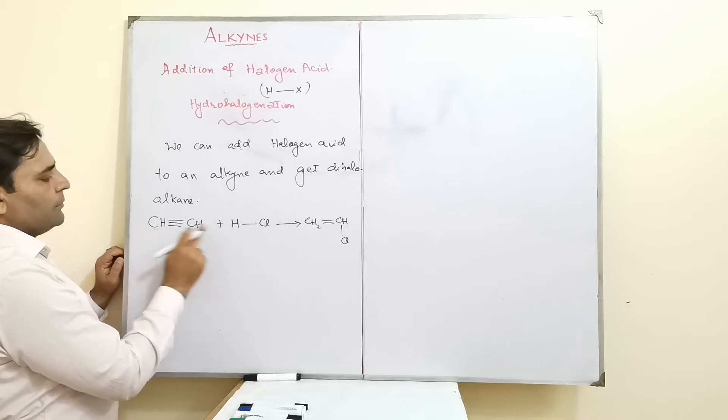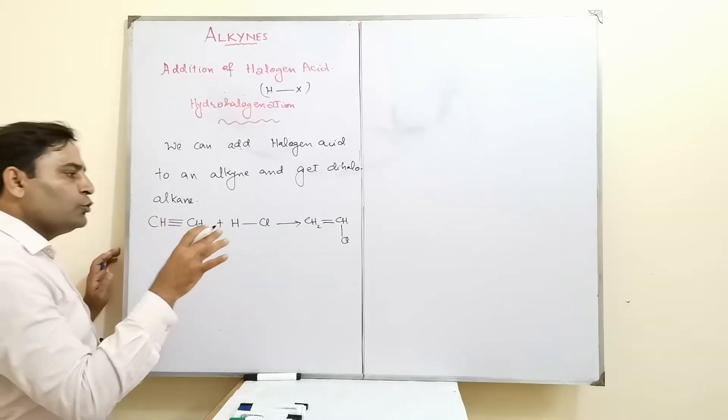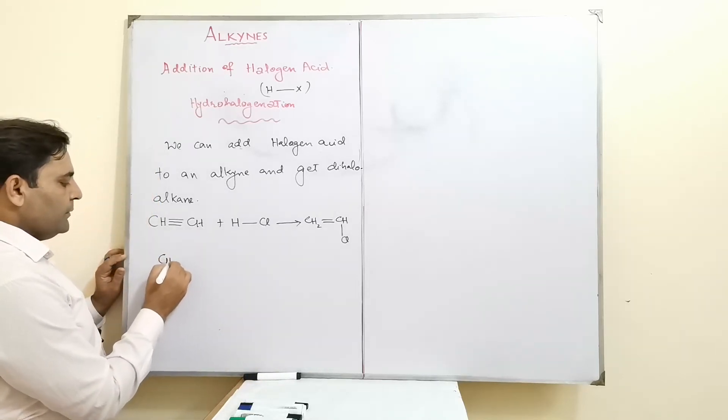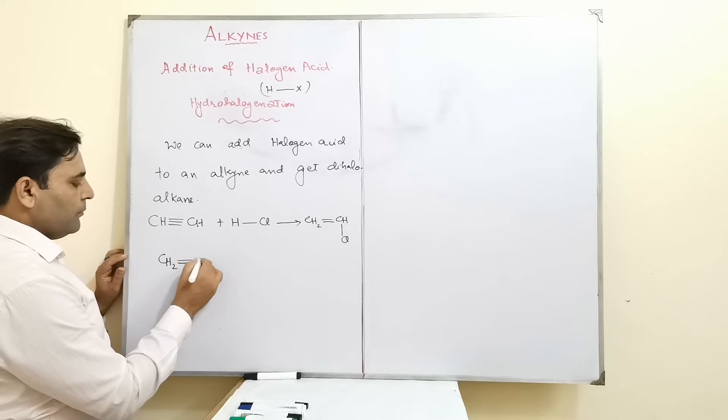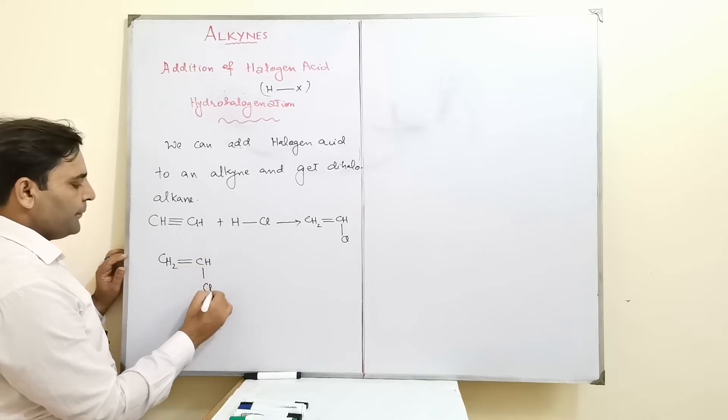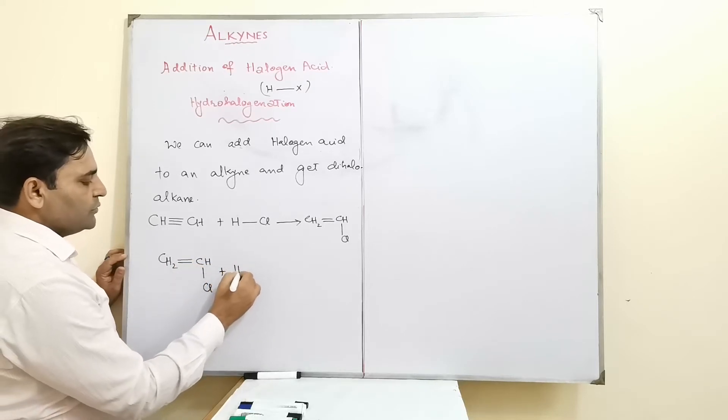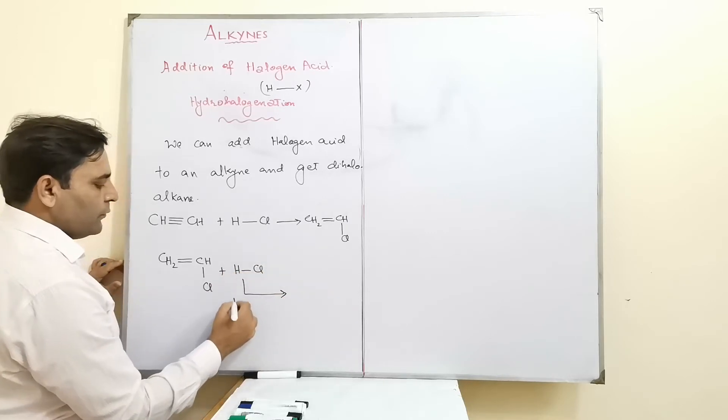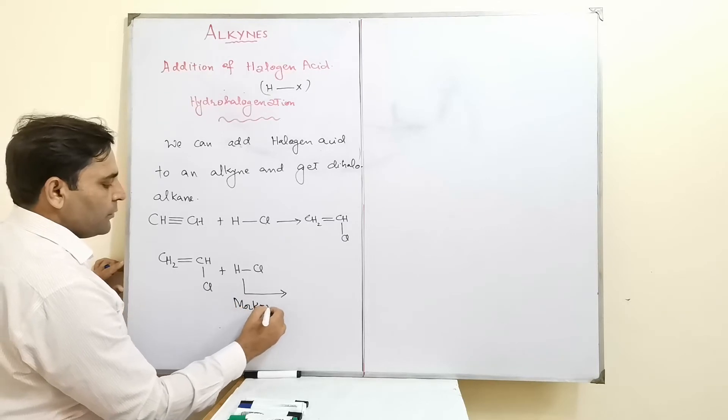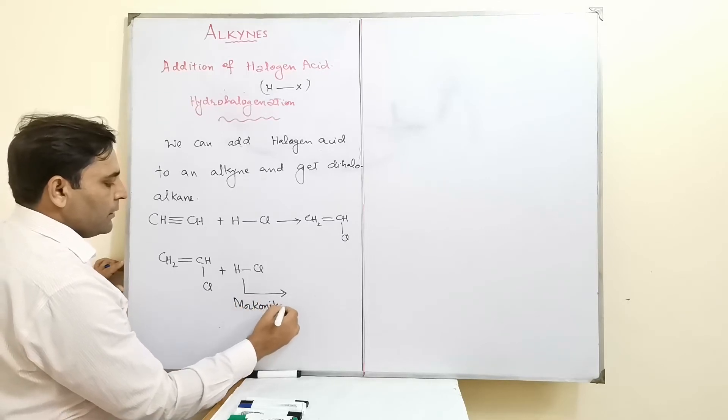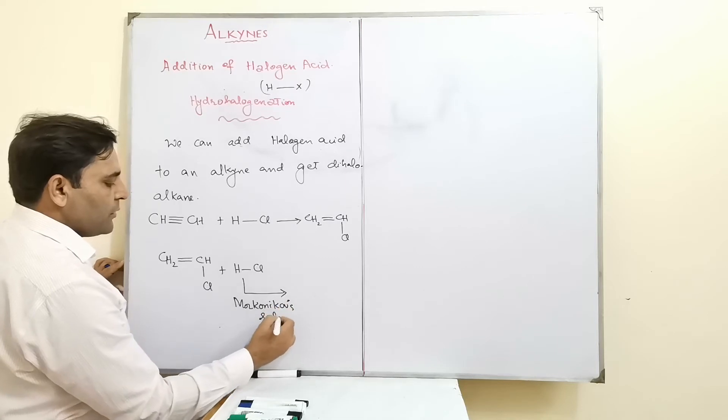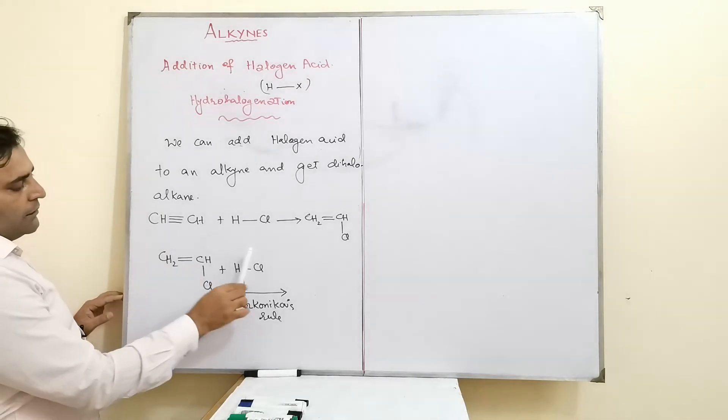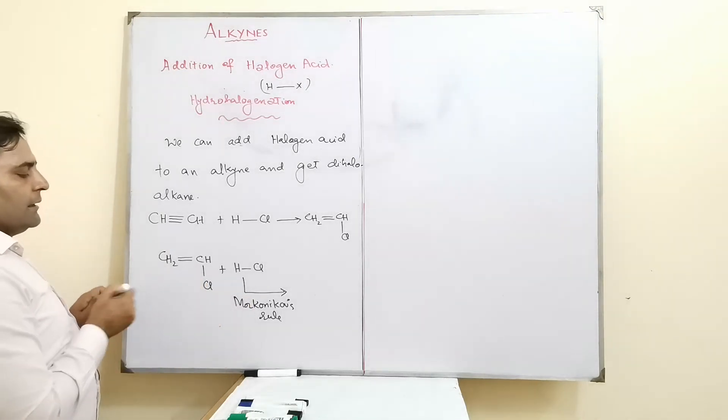But the second addition we cannot do freely. Now this is CH₂ double bond CHCl. This time when we add halogen acid or HCl, it will be according to Markovnikov's rule. Why? If you dissect it from here, this is an unsymmetrical alkene, and reagent adds to unsymmetrical alkene according to Markovnikov's rule.